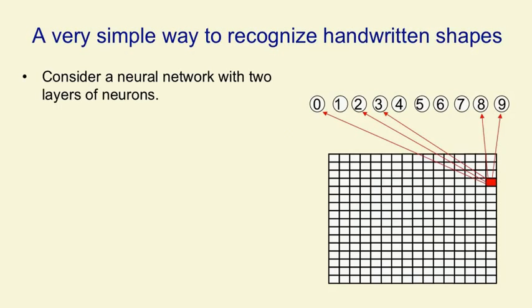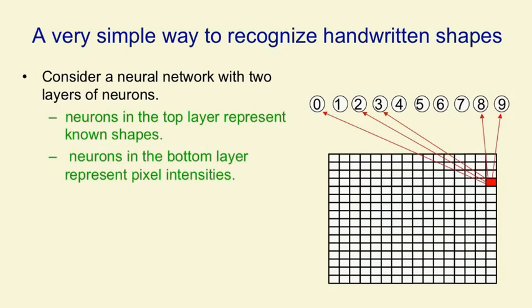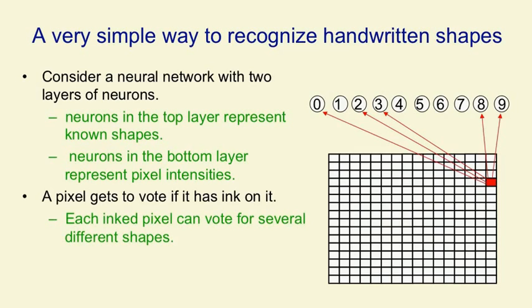The network only has two layers of neurons. It's got input neurons, whose activities represent the intensities of pixels, and output neurons, whose activities represent the classes. What we'd like is that when we show it a particular shape, the output neuron for that shape gets active. If a pixel is active, it votes for particular shapes — namely the shapes that contain that pixel. Each inked pixel can vote for several shapes, and the votes can have different intensities. The shape that gets the most votes wins, so we're assuming there's competition between the output units.